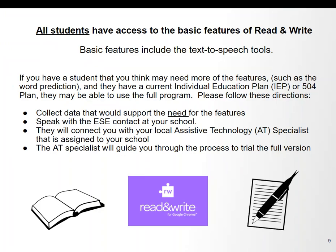So those are the features of Read and Write for Google Chrome. Right now, all students have access to the basic features — which includes the text-to-speech tools. If you have a student who you think could benefit from the different features you have seen, and they have a current individual education plan or a 504 plan, they may be able to use the full program. Please collect data that would support the need for the features, speak with the ESE contact at your school, and they will connect you with the local assistive technology specialist assigned to your school, who will guide you through the process to trial the full version with your student.